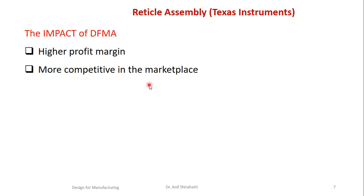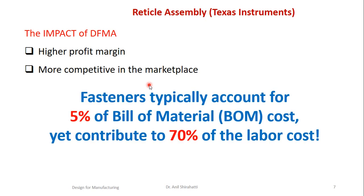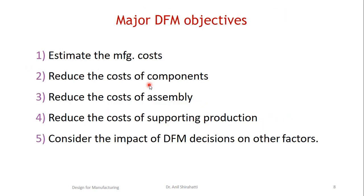The major takeaway from this case study is this: fasteners typically account for only 5% of bill of material cost, but they contribute 70% of the labor cost. This leads to more assembly time and cost, so we must always remember that assembly time should also be reduced heavily. This is done by first estimating the manufacturing cost, then reducing the cost of the component, reducing the cost of assembly, reducing the cost of supporting production, and then considering DFMA decisions on other factors.